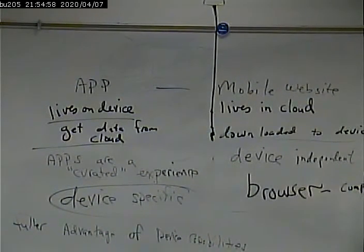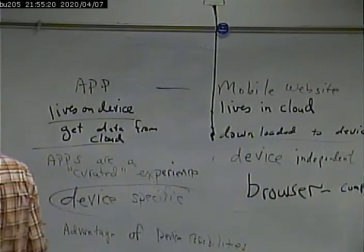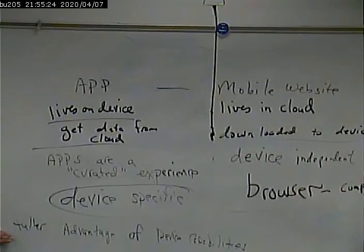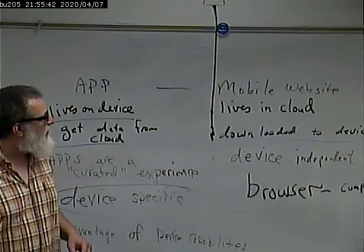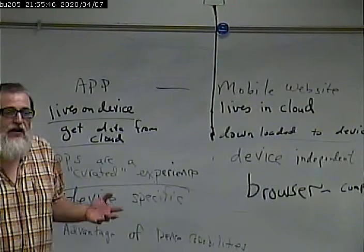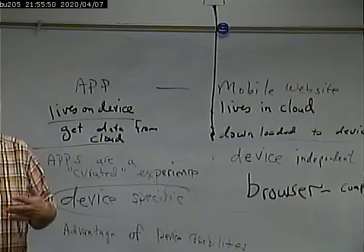So where does that leave us? That leaves us with having to examine our particular business problem and business situation and see where the advantages and disadvantages lie. Is my application something where I really want to integrate with the features of that? If so, then it probably makes more sense to develop an app. Is there something not particularly device-specific about it, maybe a mobile website would be a better approach. So you have to consider all these things within the context of the particular problem you're trying to solve.